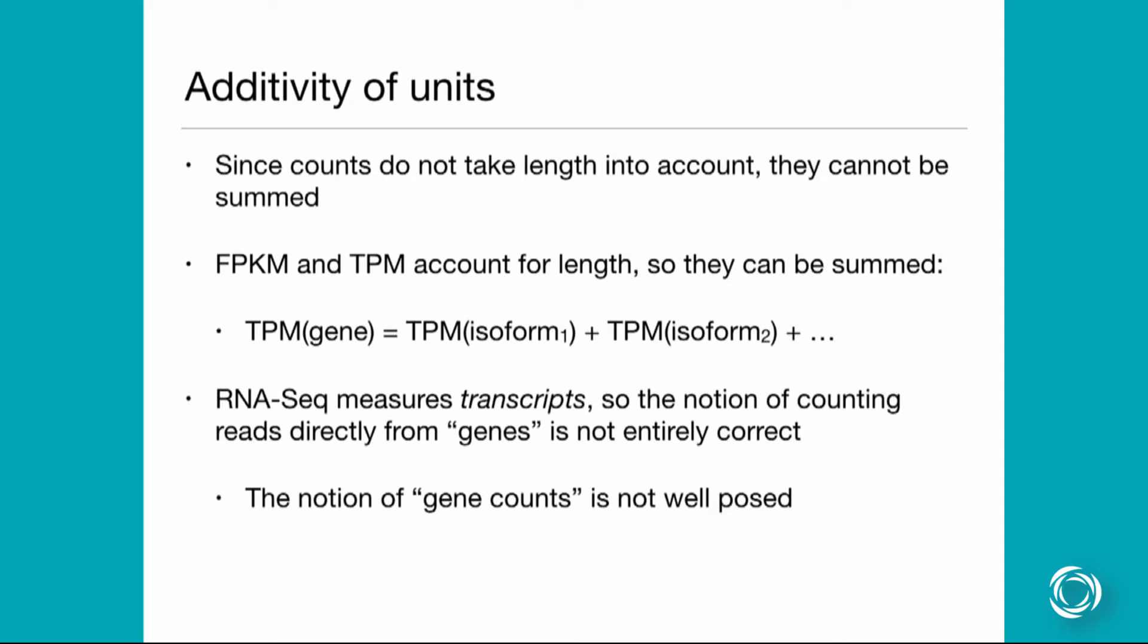This is sort of a side note. There's sort of like two schools of thought when it comes to RNA-seq analysis. There's like the transcript abundance estimation people which I fall into, and then there's also the raw counts people that take the raw counts. This is sort of a note talking about that a little bit, that RNA-seq is actually measuring transcripts so the notion of counting from genes is a bit murky. It's not really well posed and I'll show you what I mean by that in a second.